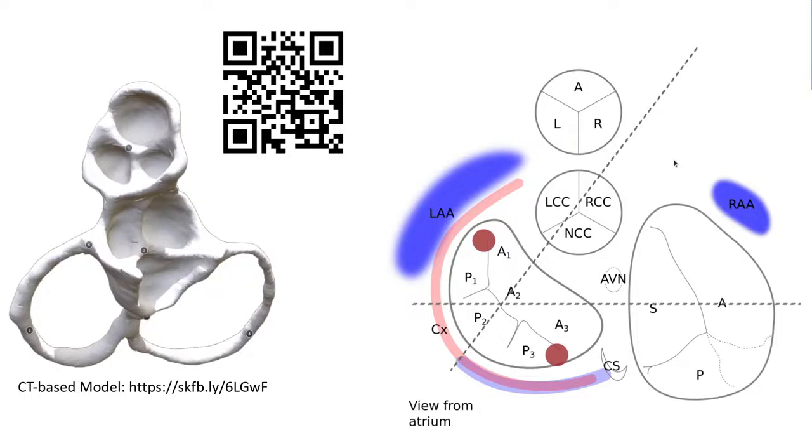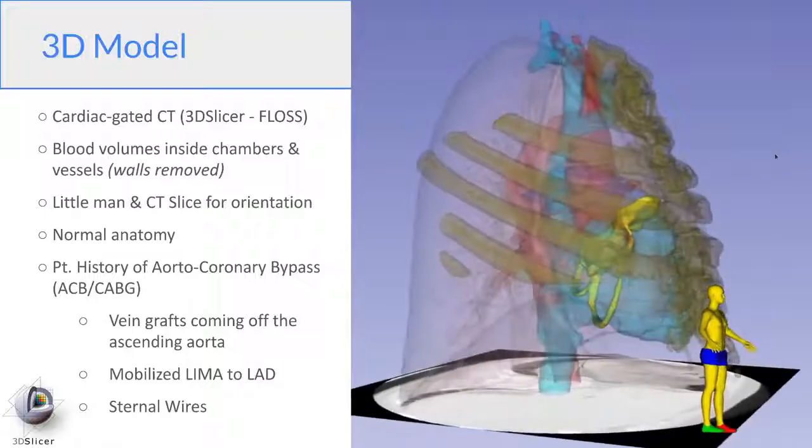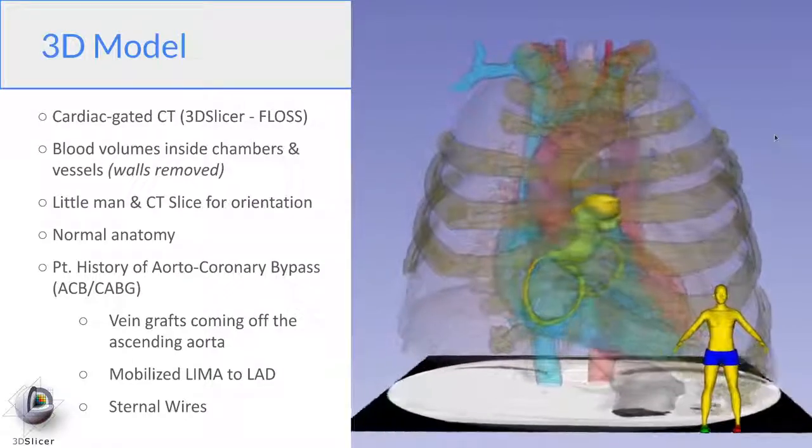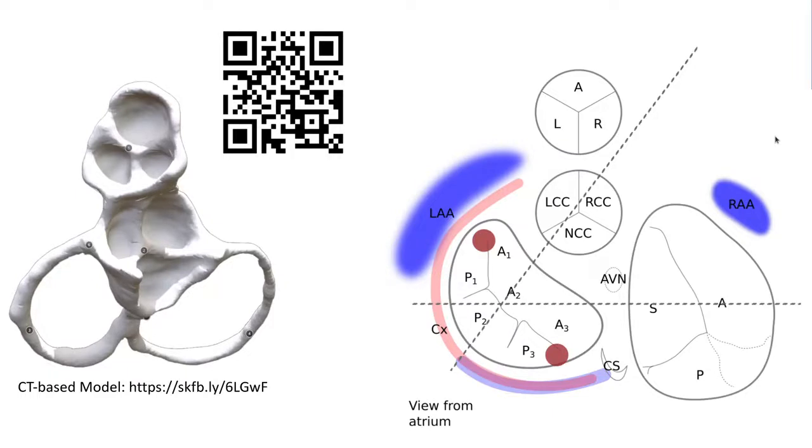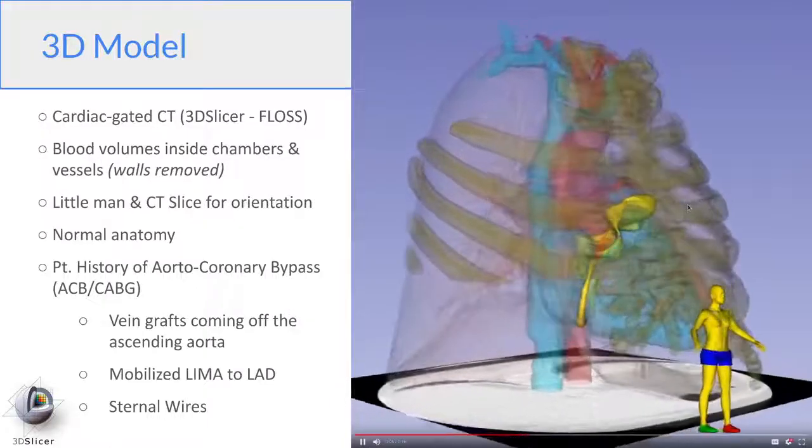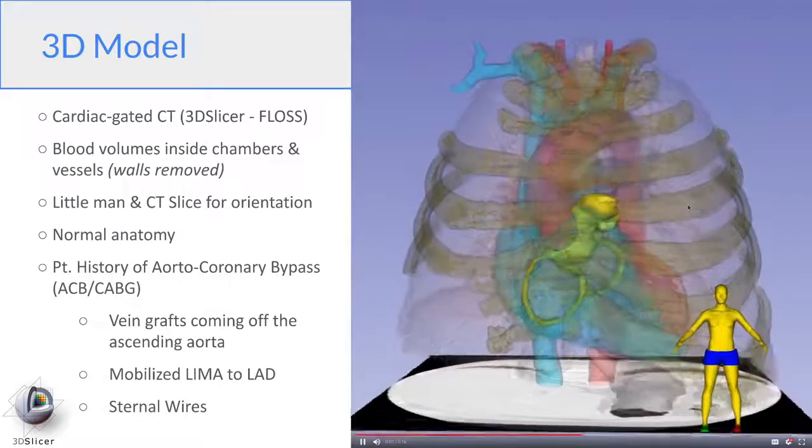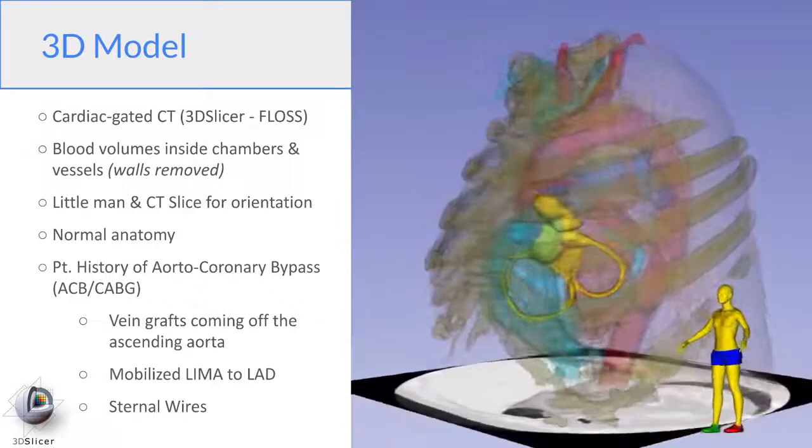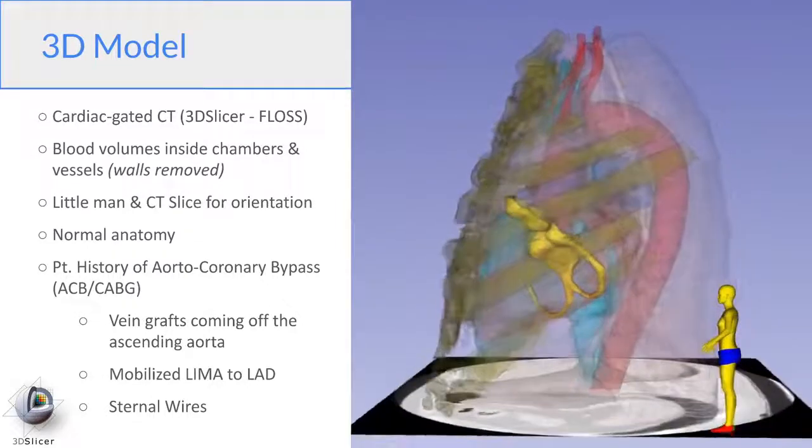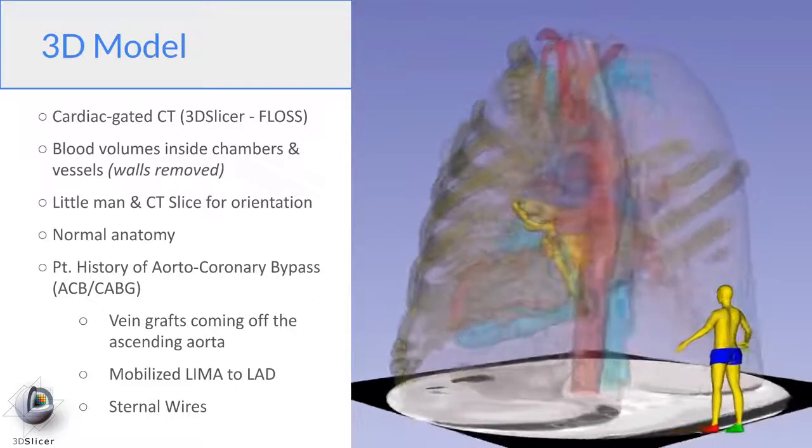So on the left, you can see the 3D structure of the heart base. This model is available as an interactive 3D model at the link that's there. So now we're going to leave the flat sheet and move into 3D. All the models you're going to see are created from a cardiac gated CT using an open source software called 3D Slicer that you can download and play with yourself.